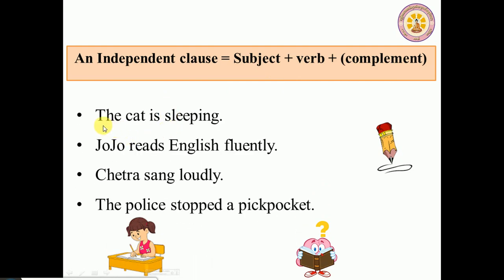Here is an example: 'The cat is sleeping.' This is a complete sentence because it has a subject — 'the cat' — and a verb — 'is sleeping.' One more example: 'Choco reads English frequently.'